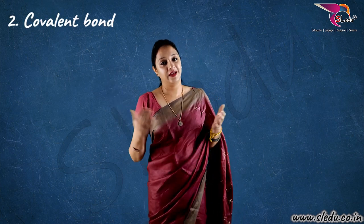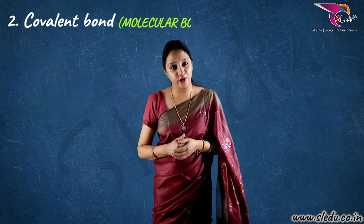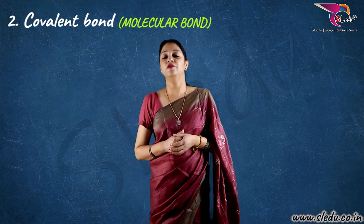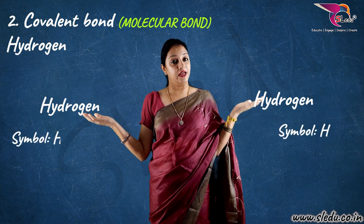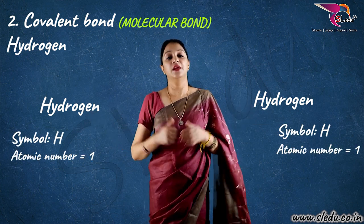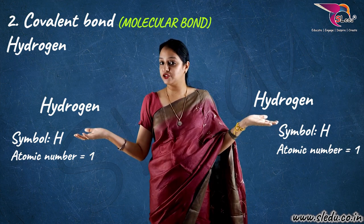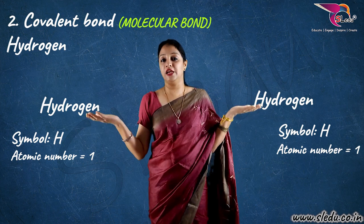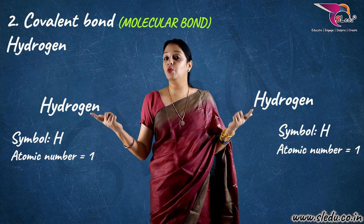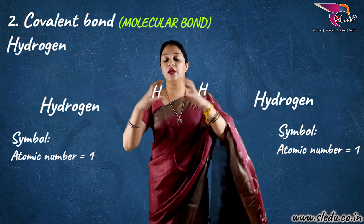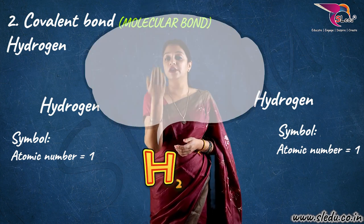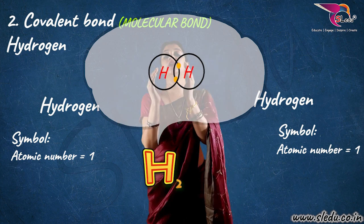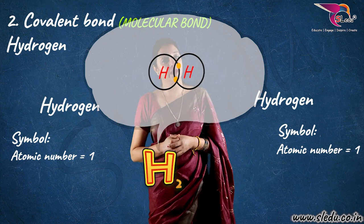Next concept I am going to take is my second type of bond, that is your covalent bond. Covalent bond is also called molecular bond. Now, if I take the example of hydrogen again — on my right side I have hydrogen, on my left side I also have hydrogen, with the symbol H. Their atomic number is one. So, their electronic configuration is also one each. Now, both of them have one electron and one shell. To complete their shell, both need one more electron. So, both will collaborate, both will share one electron each, and ultimately they form H2. So, H2 is formed when H and H combine together by sharing one electron to form the hydrogen molecule.